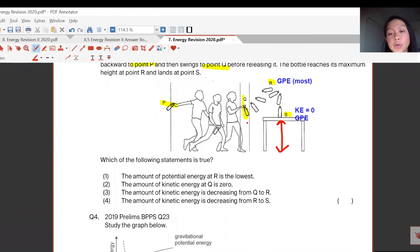Then at Q, same thing, there's still GPE and everything, but it's moving already. He released it at Q, so there's also KE here. So GPE and KE as well.